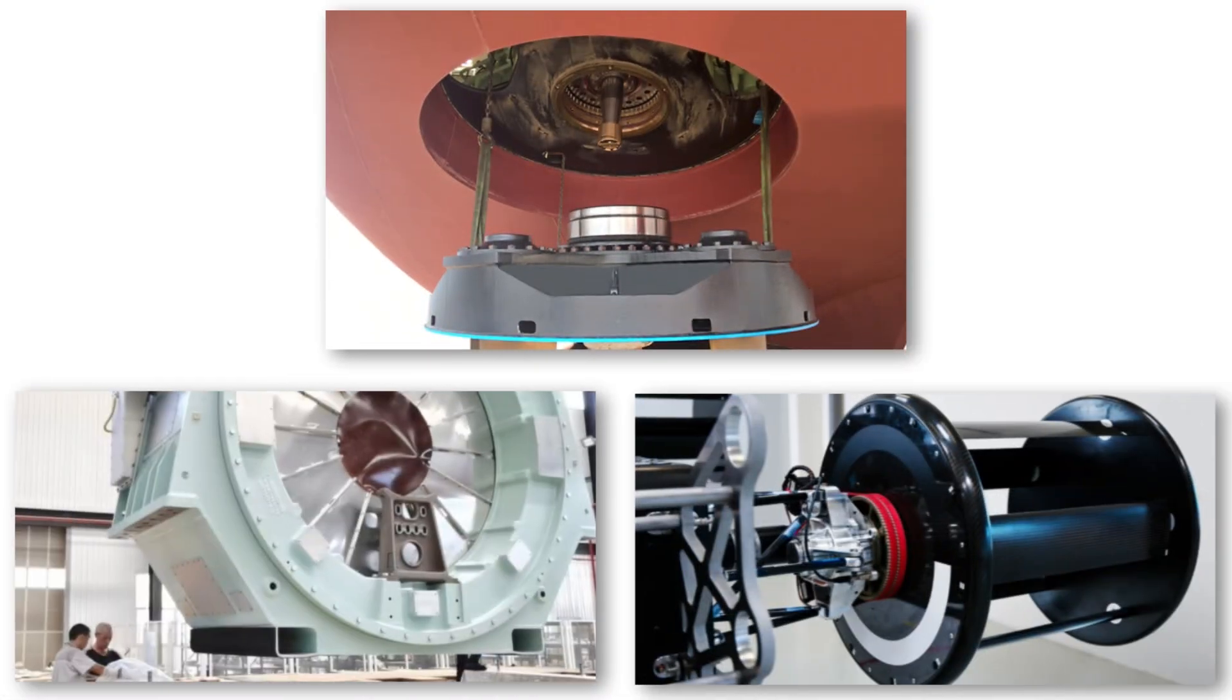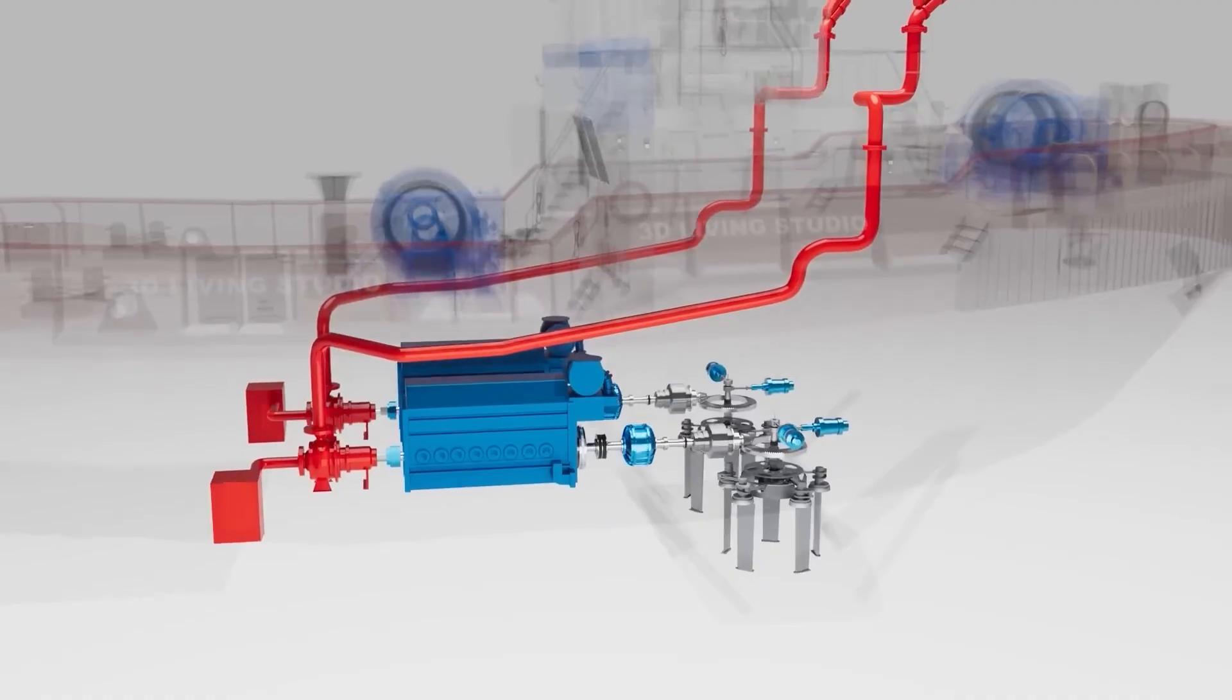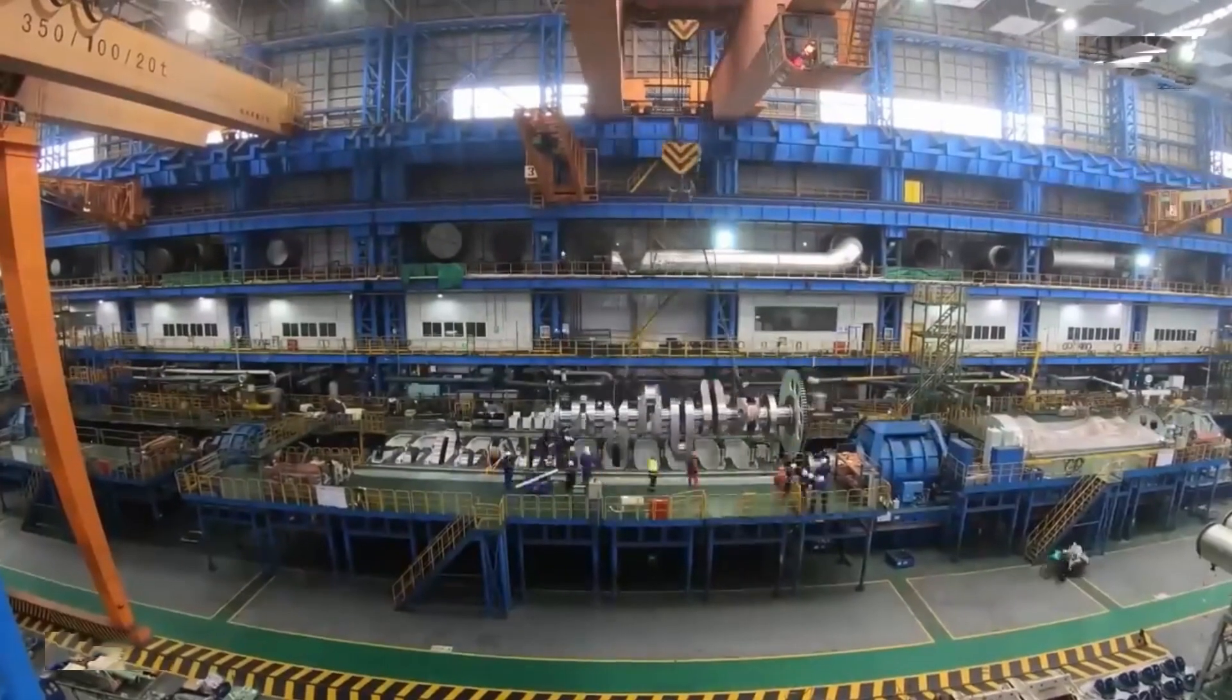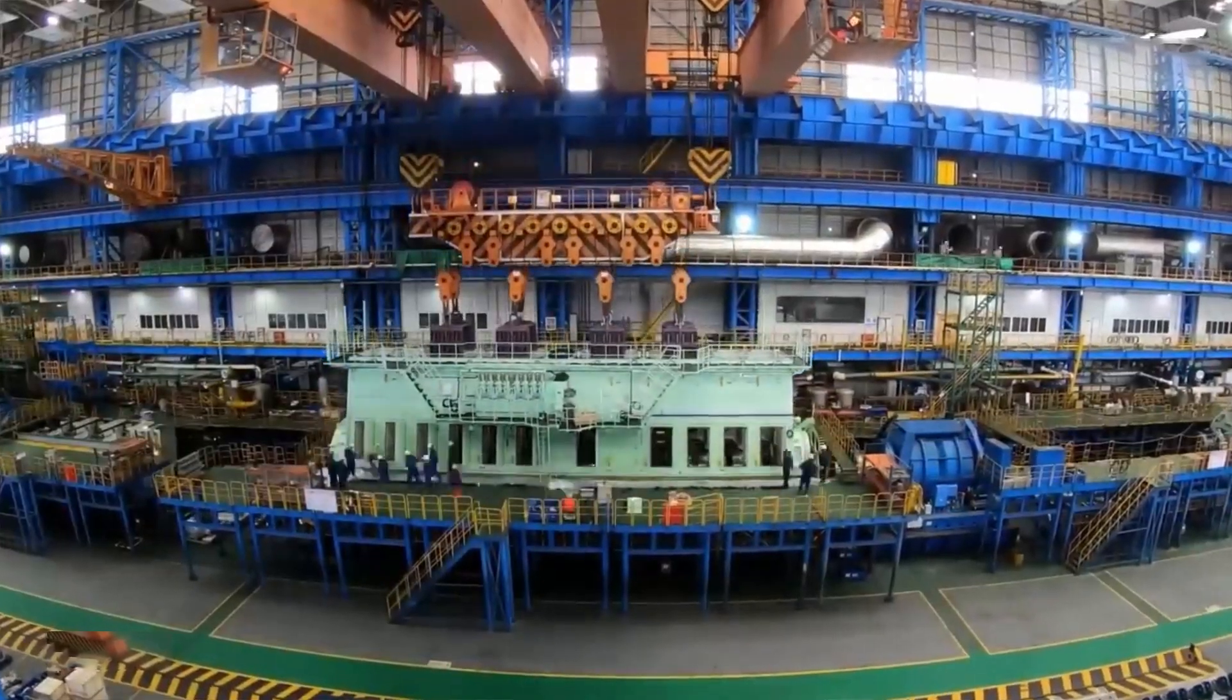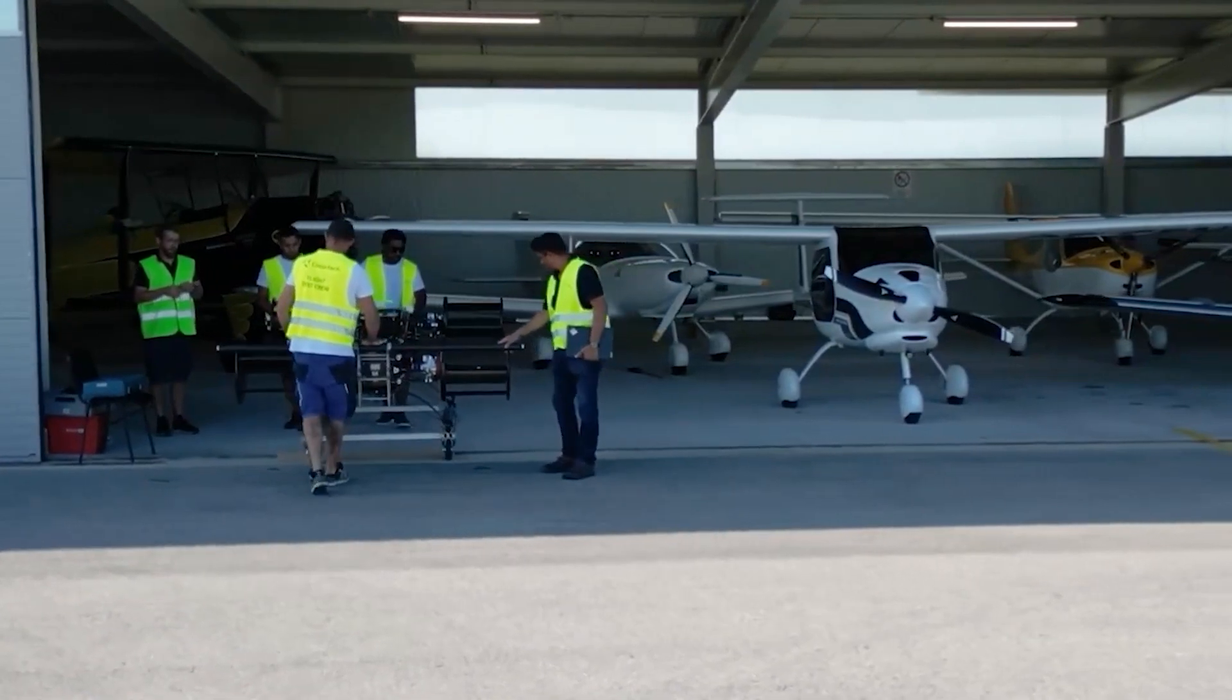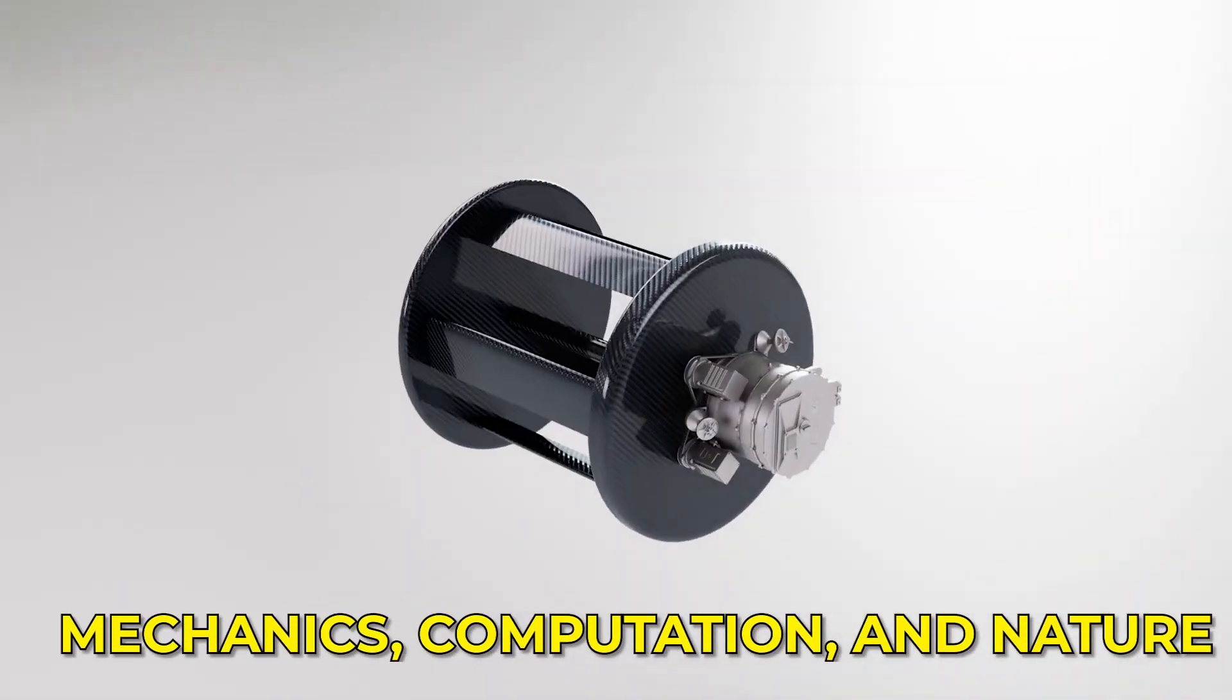And who knows, perhaps the people behind these new advancements, whether at Voith, ABB, or Cyclotech, might one day be recognized for their contributions with the world's most prestigious award. Because what they're doing isn't just improving machines, they're redefining how motion itself is engineered. They're turning old principles into living, adaptive systems that bridge the gap between mechanics, computation, and nature.